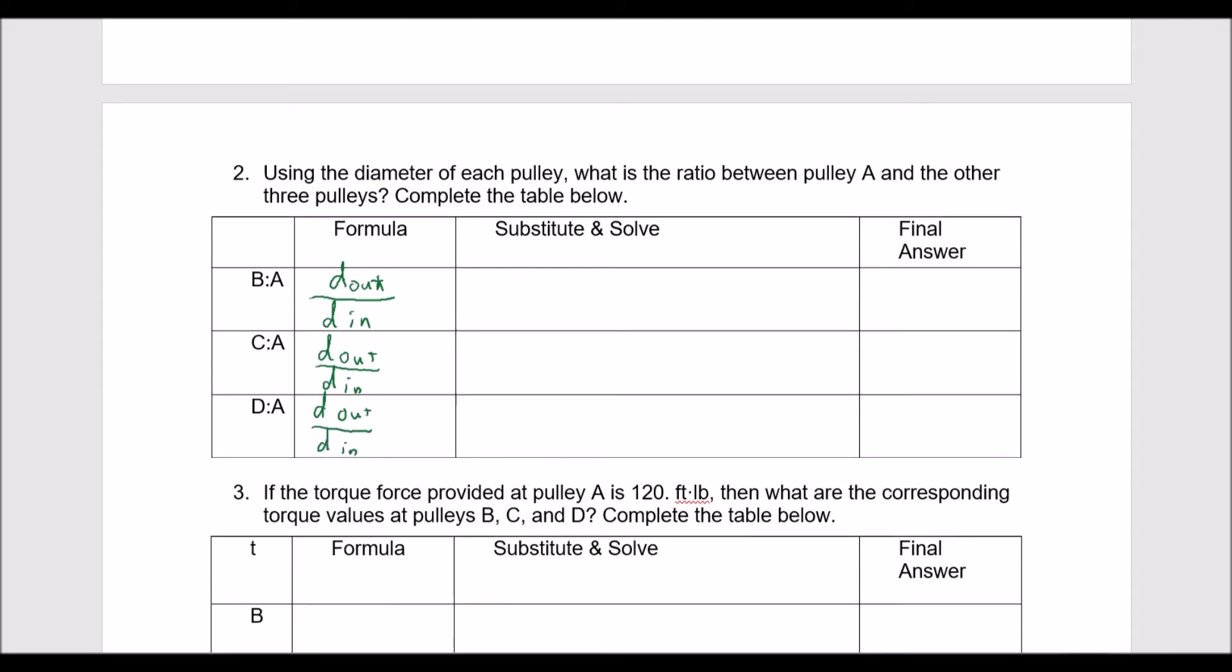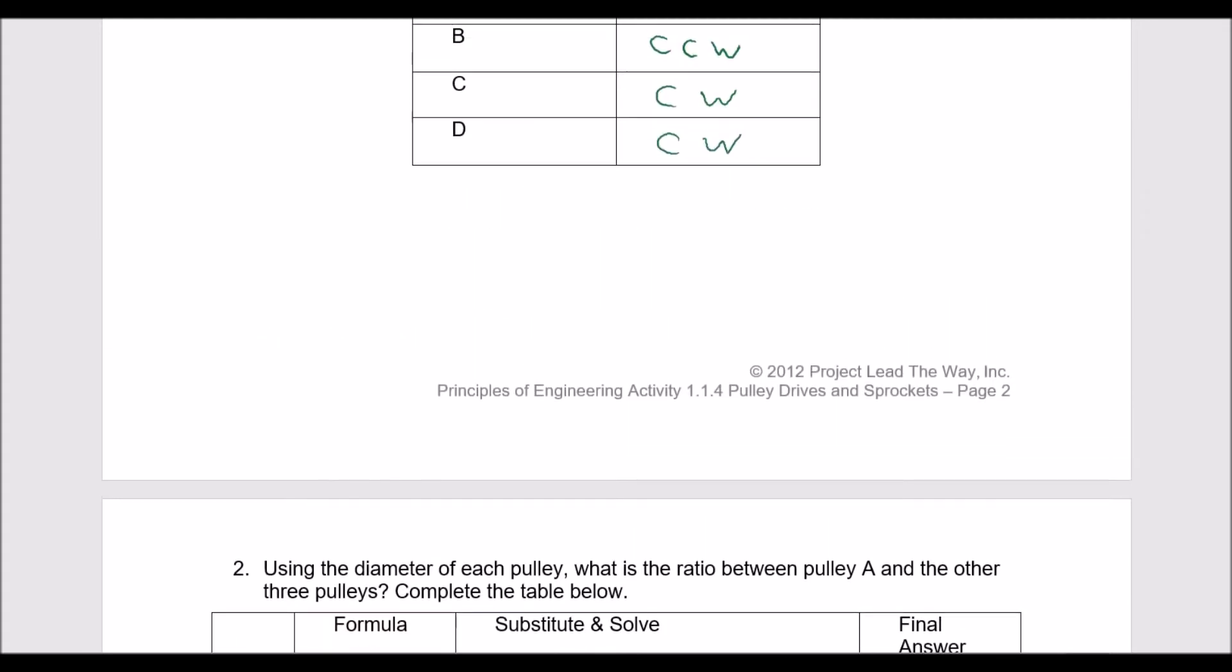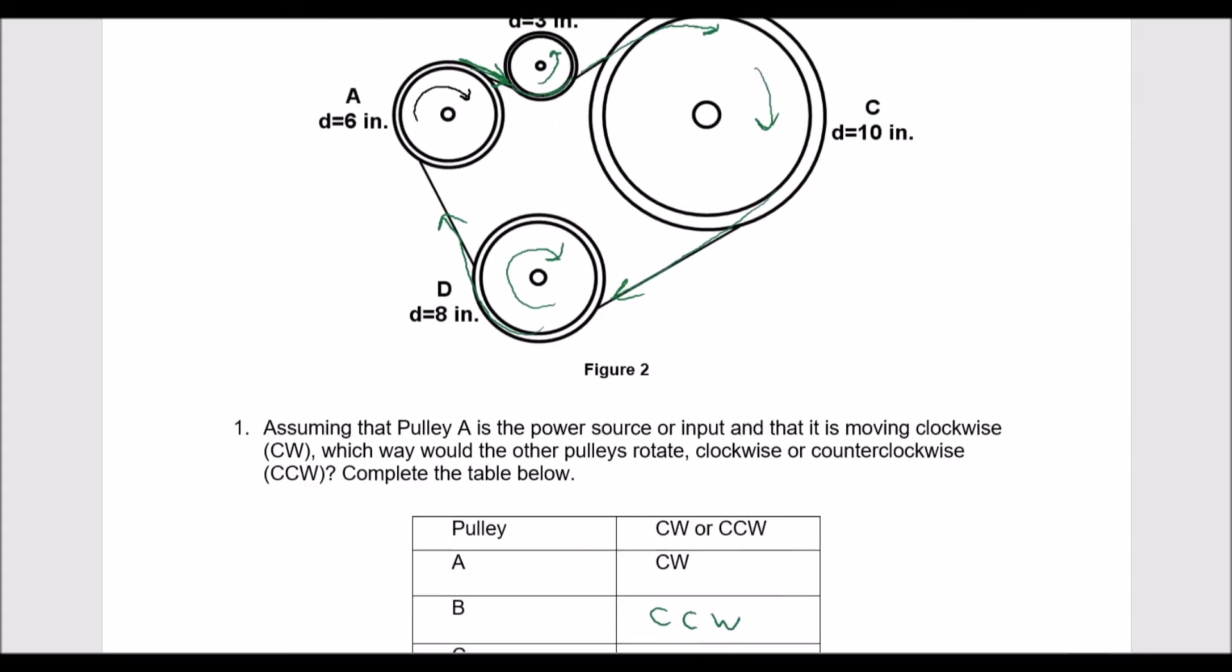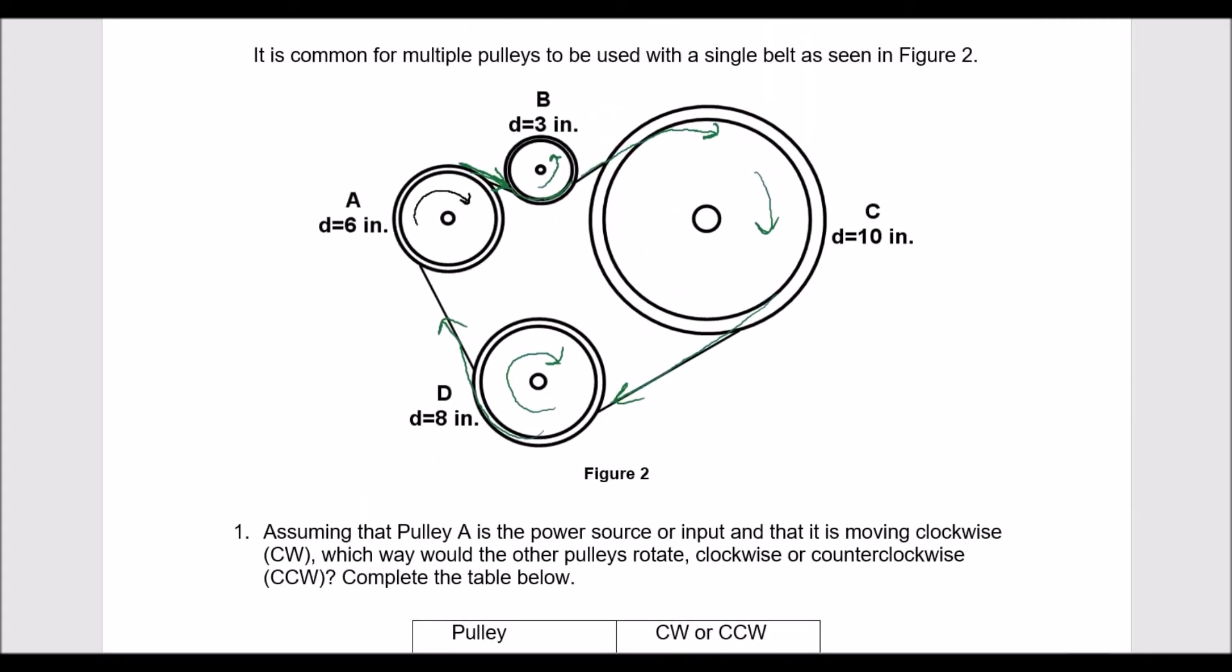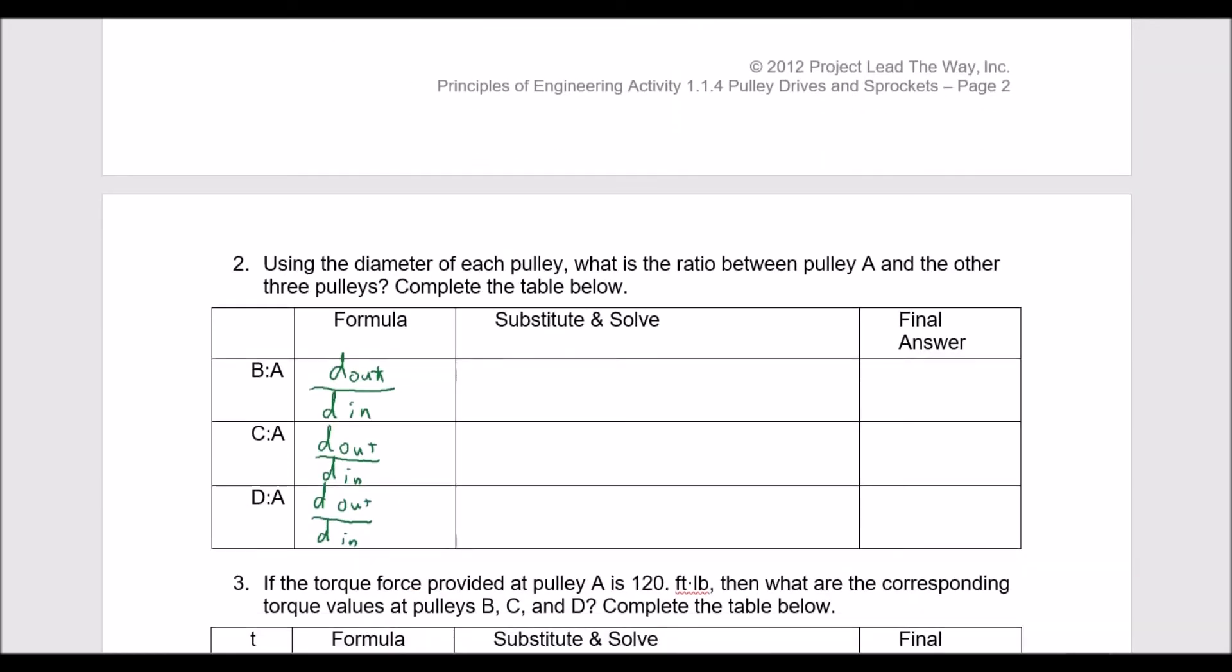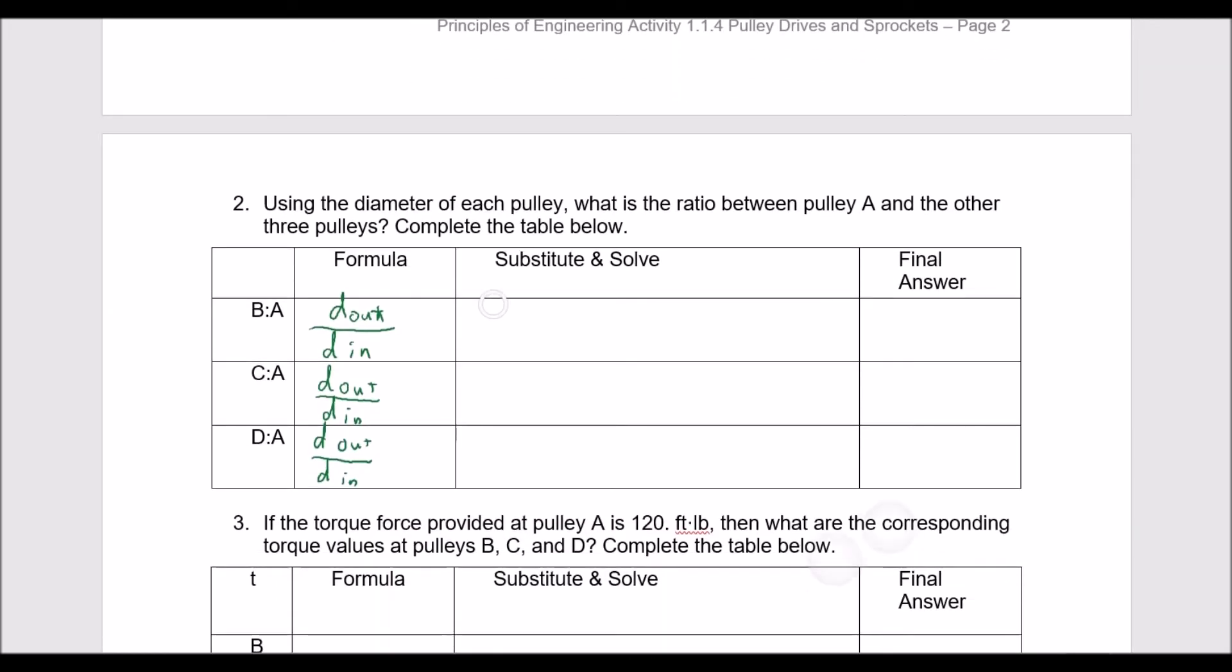So for the first pulley between A and B, we have a diameter for the out is going to be 3 and for the in is going to be 6. So we just simply go 3 divided by 6, which means our final answer will be a 1 to 2 ratio.